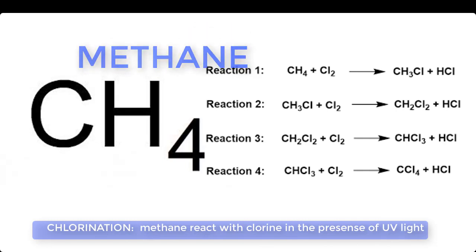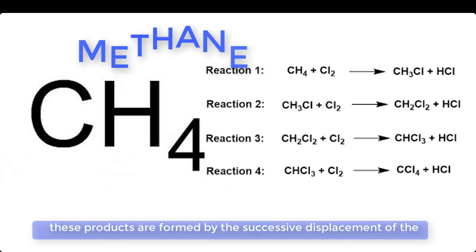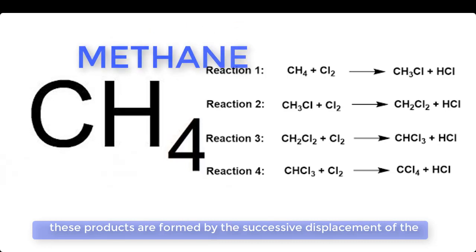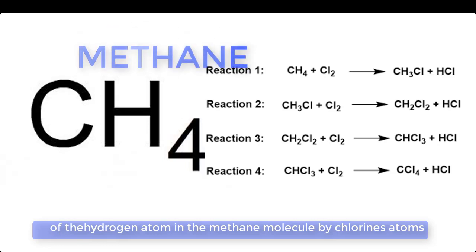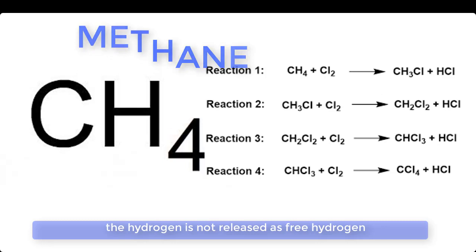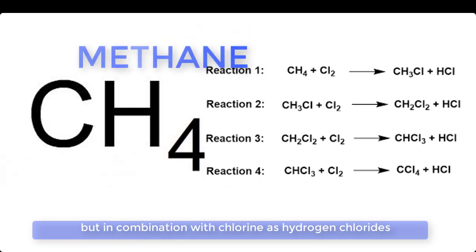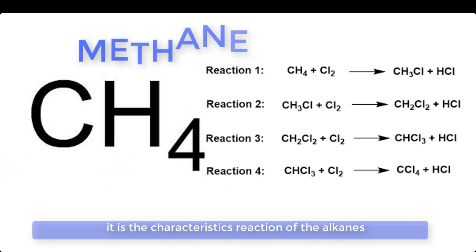Chlorination. Methane reacts with chlorine in the presence of ultraviolet light, which acts as a catalyst, to yield a mixture of products. These products are formed by the successive displacement of the hydrogen atoms in the methane molecule by chlorine atoms. The hydrogen is not released as free hydrogen but in combination with chlorine as hydrogen chloride. This reaction is called a substitution reaction and is a characteristic reaction of the alkanes.